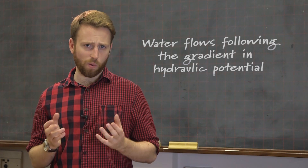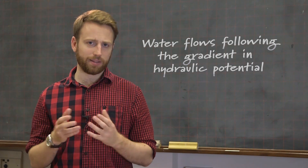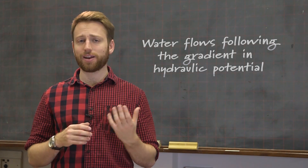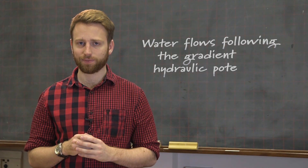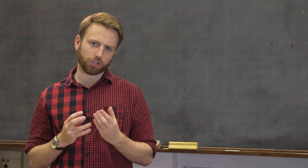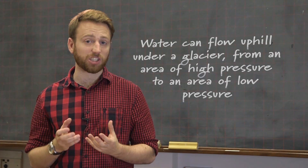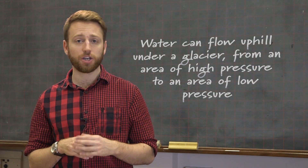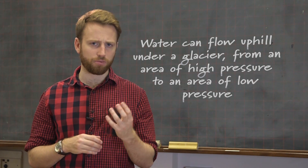In general, water flows following the gradient and hydraulic potential. In nature this is always downhill — everyone knows water flows downhill. However, in the glacier this isn't necessarily the case, because the hydraulic potential is modified by the weight of the ice above. For this reason, under a glacier water can actually flow uphill, flowing from an area of high pressure to an area of low pressure.